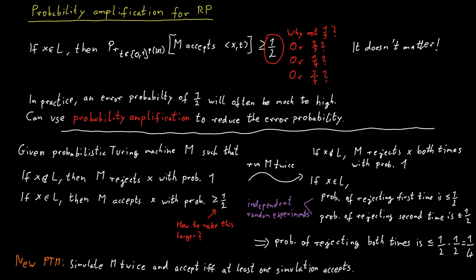And the general principle just remains the same. You run the machine, say, k times in total. If it rejects every single time, you reject. If it accepts just a single time, you accept. And by doing this, because all of these k runs are independent random experiments, the probability that you accept the word that is in the language now increased to at least one minus one over two to the k.